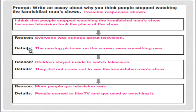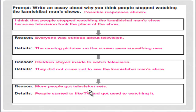This is the reason — you have to add details or support it with examples. The moving pictures on the screen were something new. Reason number two: children stayed inside to watch television. They did not come out to see the Kamishu Bai Man's show. The last reason is more people got television sets or television devices. People started to like TV and got used to watching it.